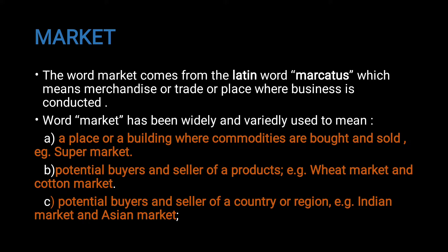For example, a supermarket is where a lot of commodities are bought and sold at cheap and lowest prices. The term also refers to potential buyers and sellers of a product — for example, wheat market and cotton market — or buyers and sellers of a country or region, for example, Indian market and Asian market.